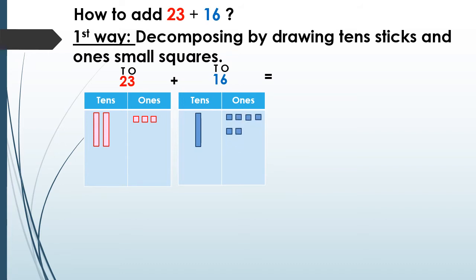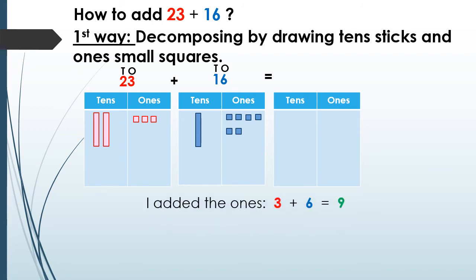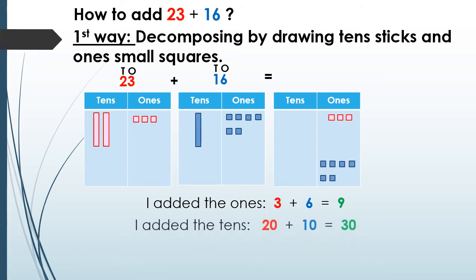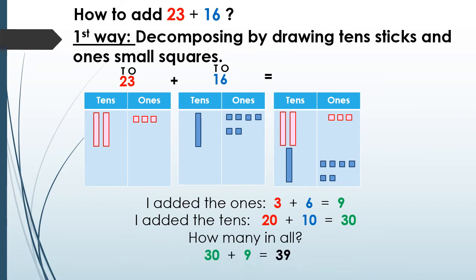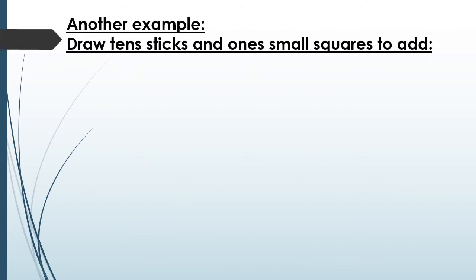Now let's add. I add the ones: 3 plus 6 equals 9. I add the tens: 20 plus 10 equals 30. I'm gonna use these two answers together — 30 plus 9 equals 39. So 23 plus 16 equals 39.